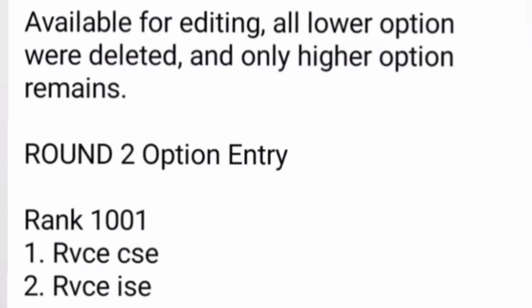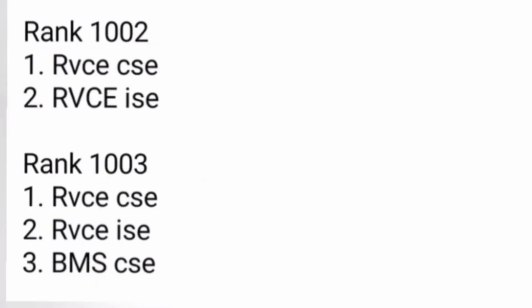When moving to the next round, all options lower than your current allotment are deleted, and only the higher options remain. For rank 1001 and 1002, who got BMS CSC, only the two options above it — RV CSC and RV ISC — remain in their round two option entry. For rank 1003, who got MSRIT CSC, the three higher options — RV CSC, RV ISC, and BMS CSC — remain in his option entry. Students can modify or delete from these remaining entries.